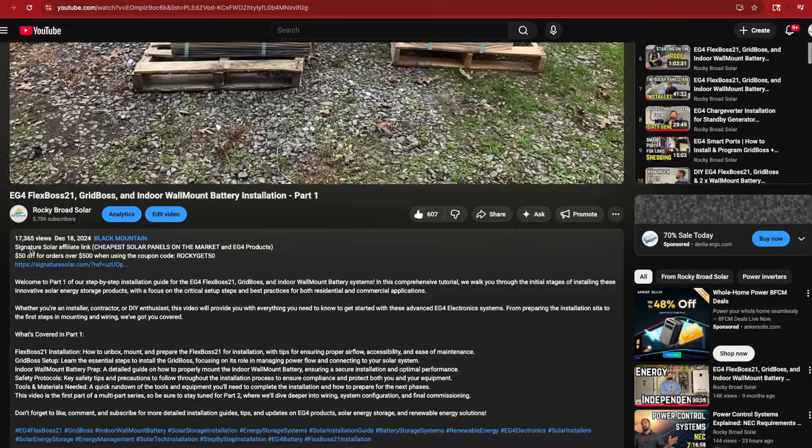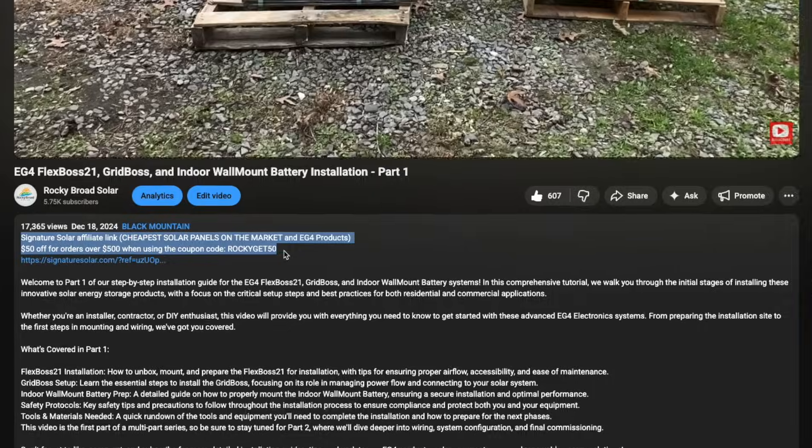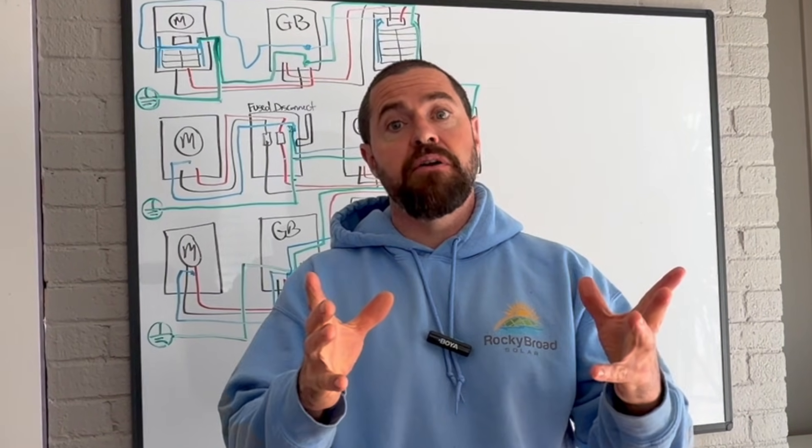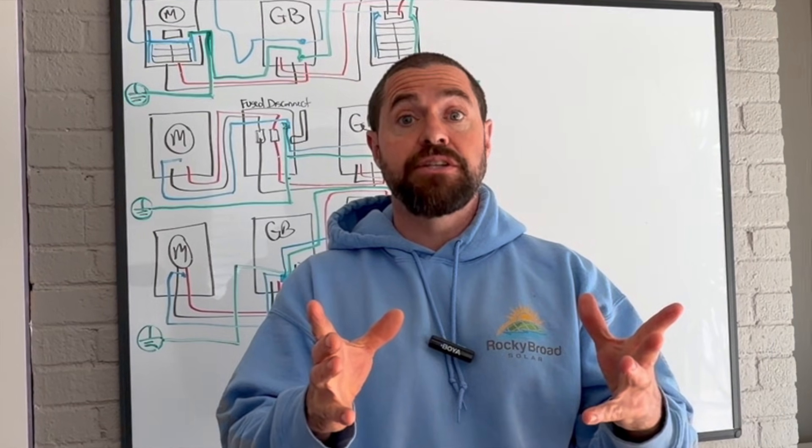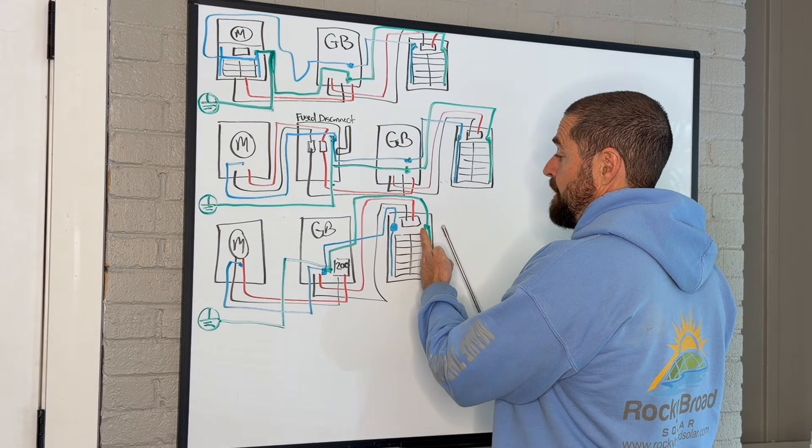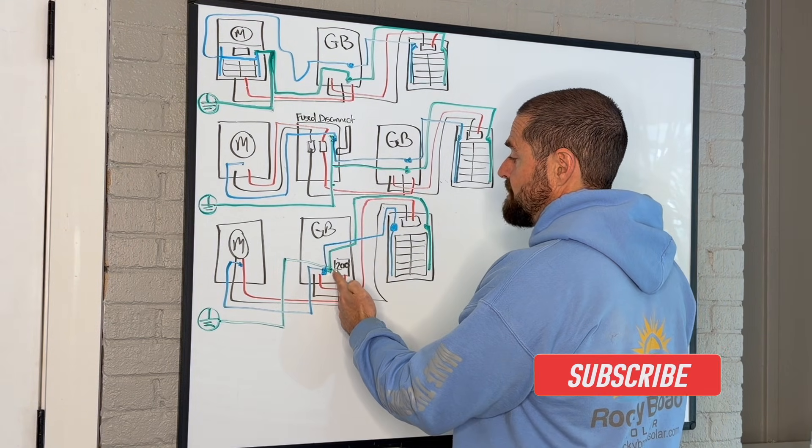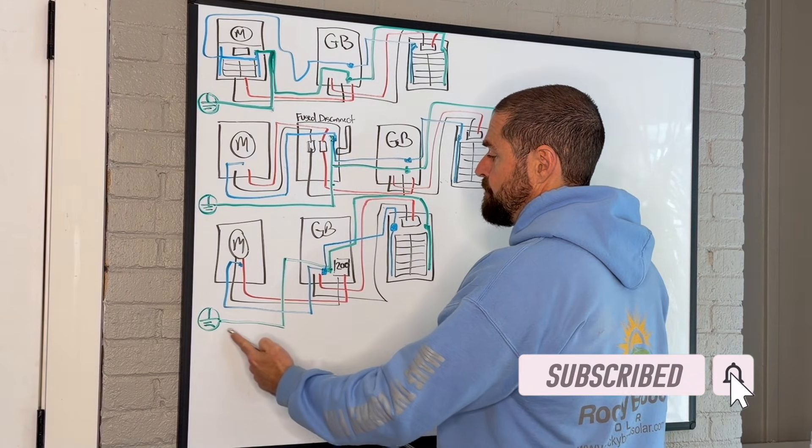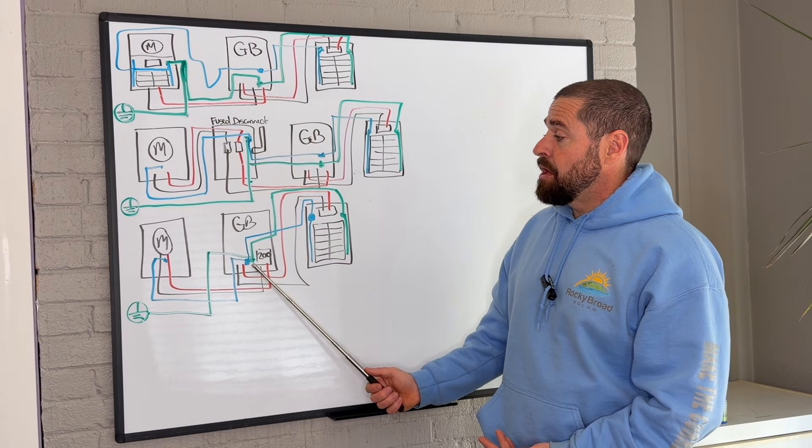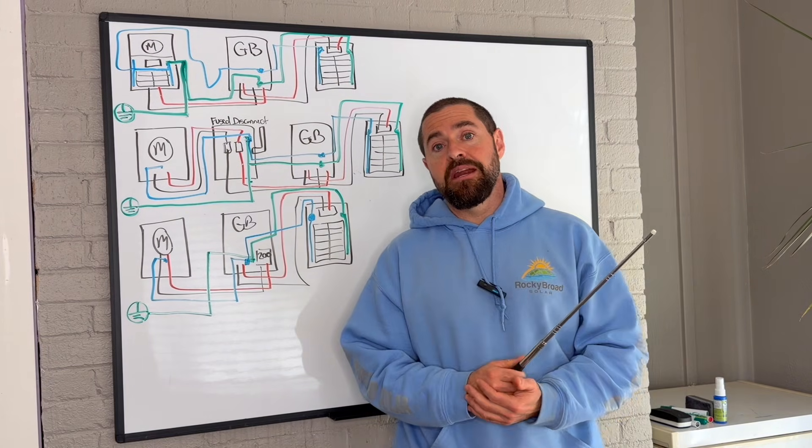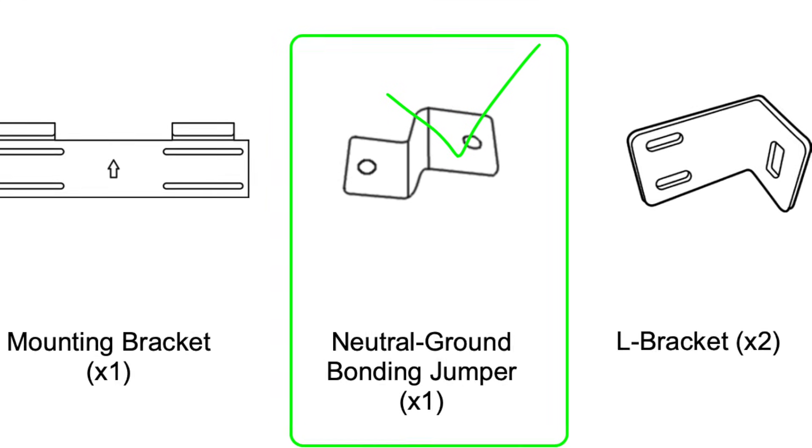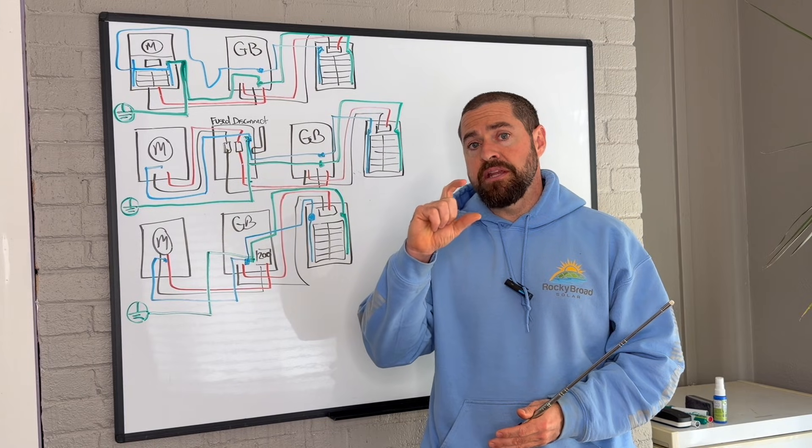If you're planning on buying some of this equipment for your home, check out our discount codes and affiliate links down in the description below. You're going to remove that grounding electrode conductor from your sub panel. You're instead going to have it in your grid boss, and that is what's going to run from the grid boss to your ground rods. Don't forget this is where you do want to bond your grounds and neutrals inside of that grid boss using that optional accessory that comes with the grid boss, that little neutral to ground bonding jumper.